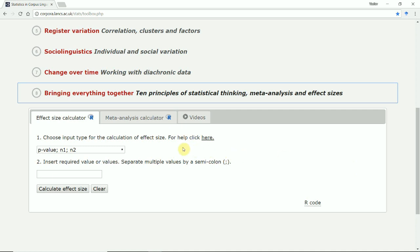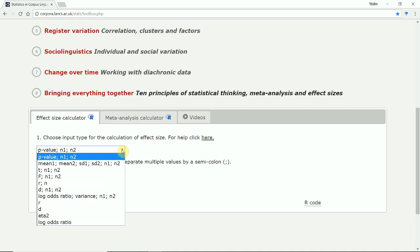We have different types of input options ranging from p-values and the sizes of the corpora, corpus 1, corpus 2, in terms of their texts or speakers, mean 1, mean 2, standard deviation 1, standard deviation 2, and again, sample size in corpus 1 and sample size in corpus 2, in terms of their texts or speakers.